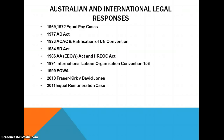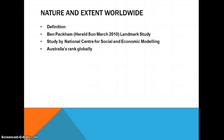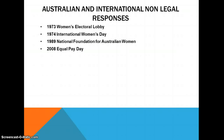In 2011, the Equal Remuneration Case saw Fair Work Australia rule on 16 May that people working in social and community services were underpaid compared to those doing similar work in state and local governments, partly due to an undervaluation of work based on gender. This exemplifies that even with all the acts previously mentioned, a major problem of pay inequality still exists.